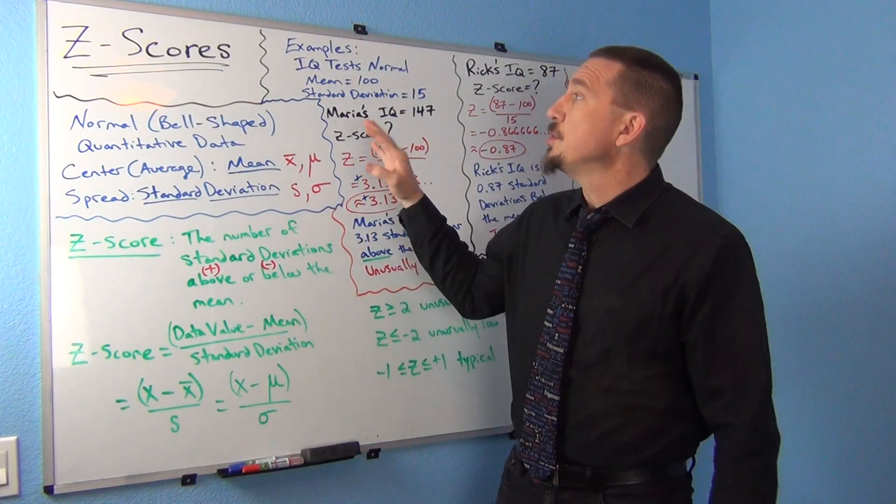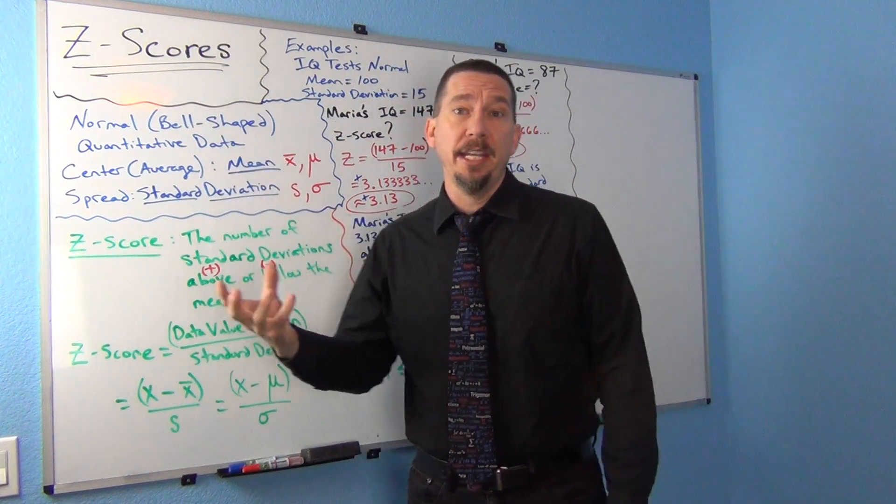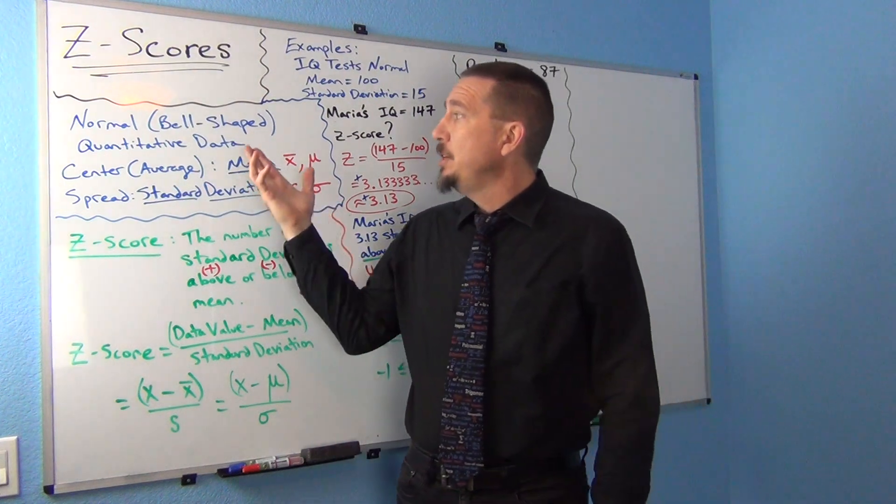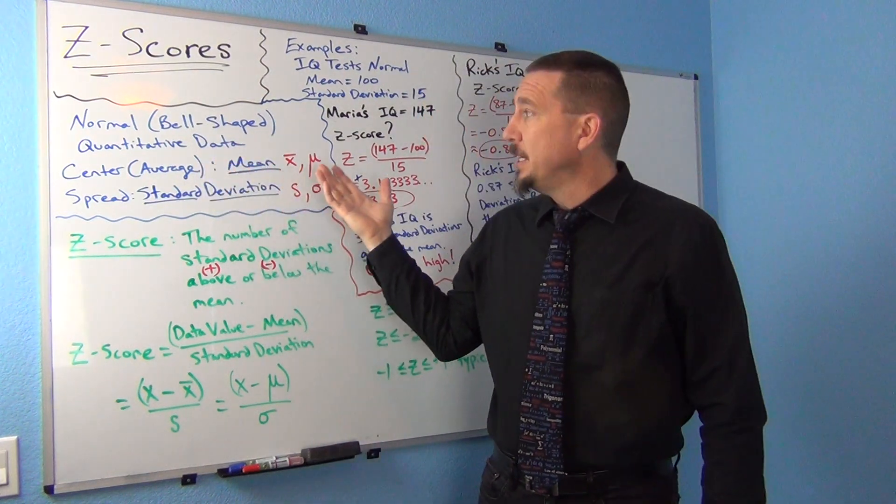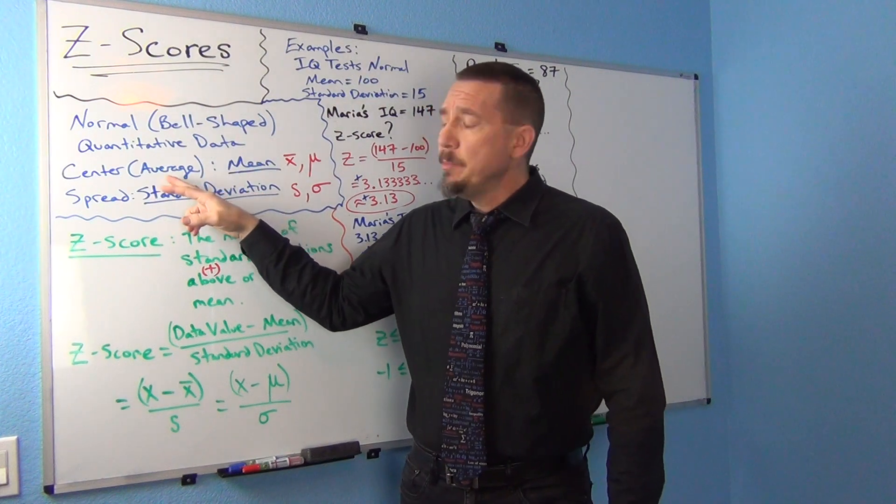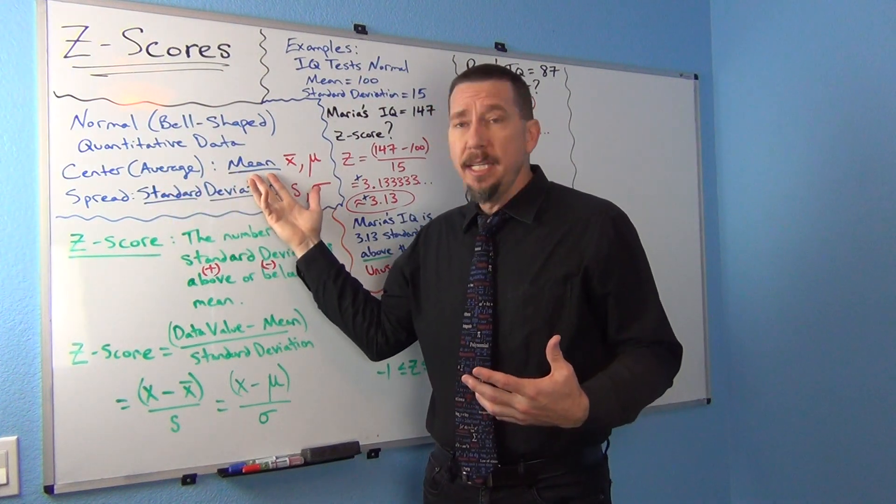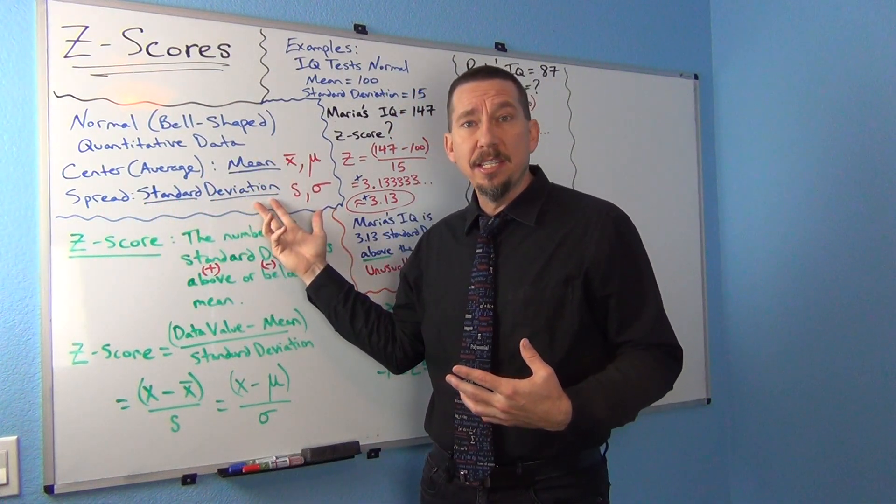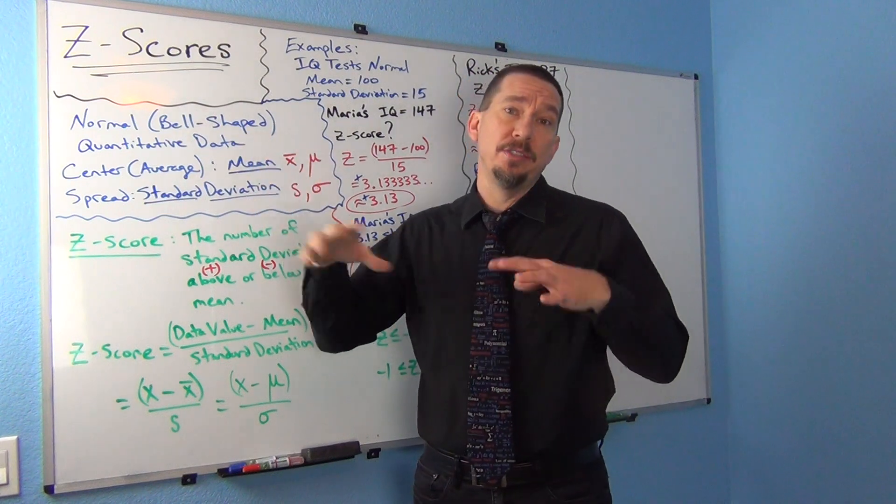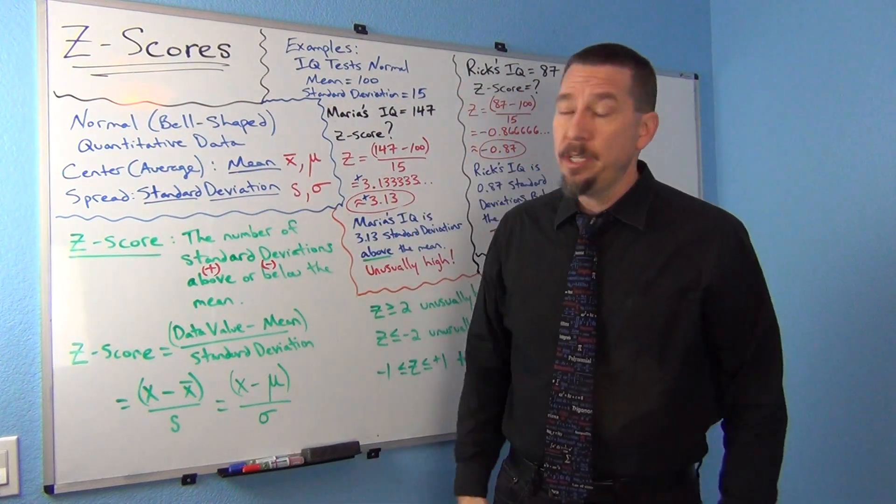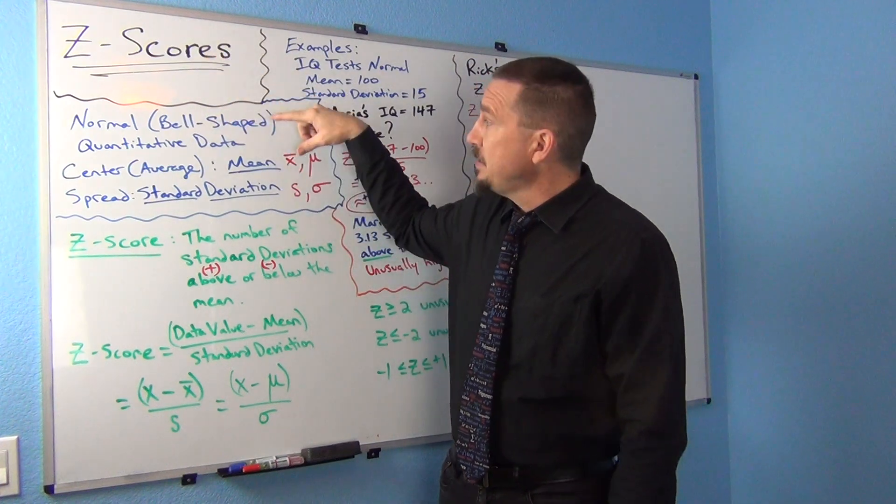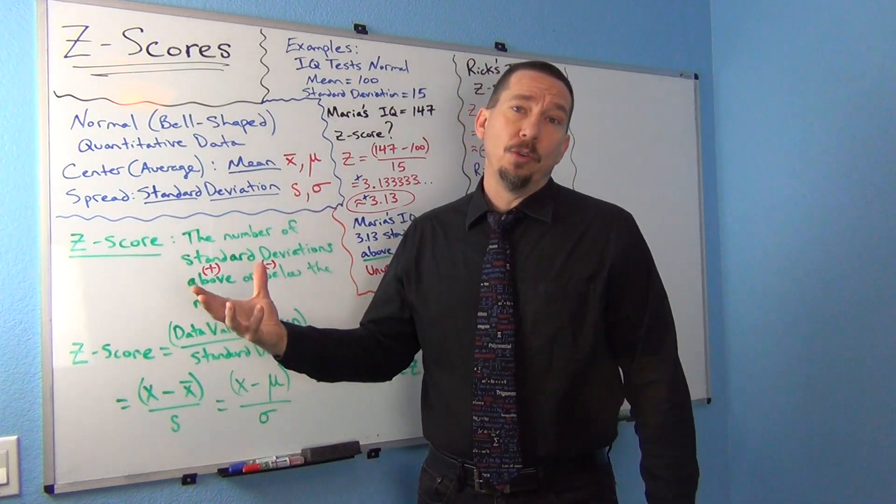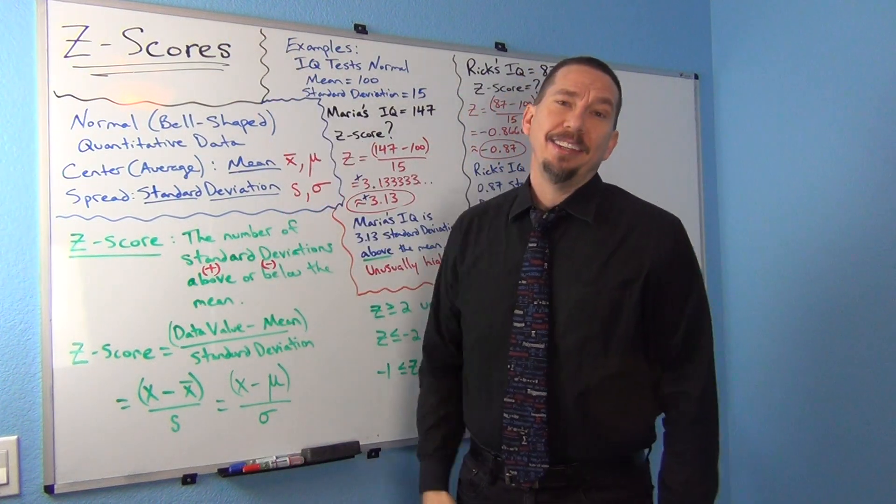The first thing to remember is Z-scores really go with normal data. The data does have to be normal for the Z-score to be accurate. If you remember last time when we talked about normal quantitative data, we said that the most accurate average or center is the mean and the most accurate spread is the standard deviation. Those two statistics were only accurate if the data was normal or bell-shaped. The Z-score calculation is based on the mean and standard deviation being accurate. So you want to make sure that your data is normal before you start looking at Z-scores.